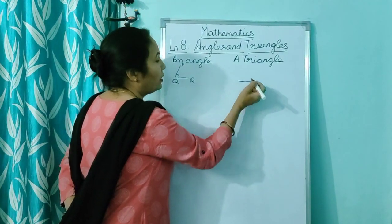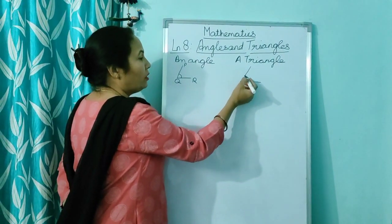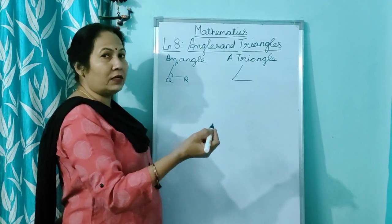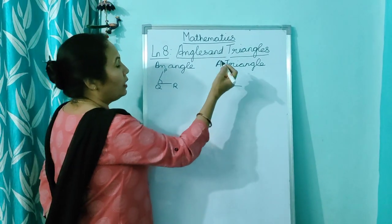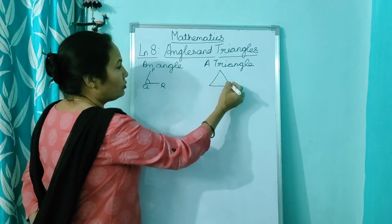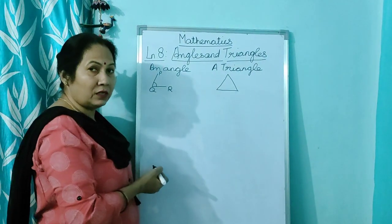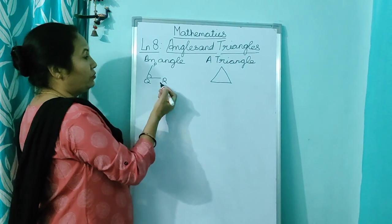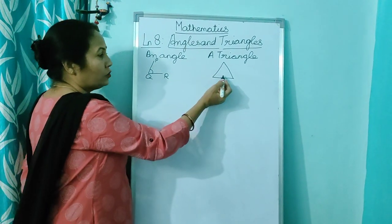Now see, first I draw a line, then I draw another line. When you draw these, children, you use a ruler. Here I am showing you in freehand. Now when you close these two points, what is this? This is a triangle. So the difference between this is that this is open and this is closed.